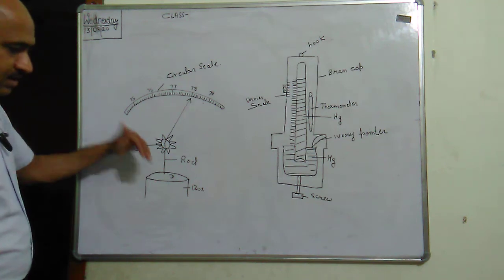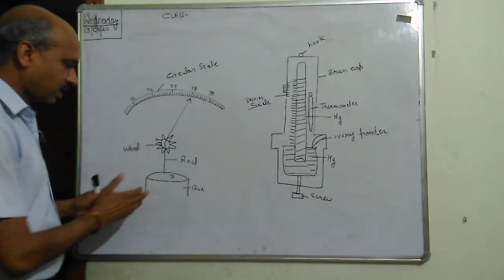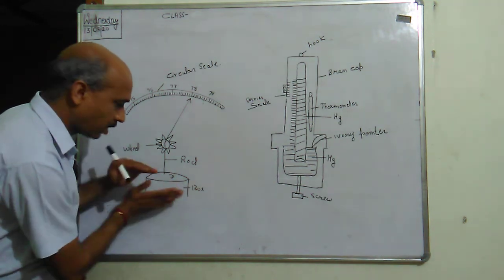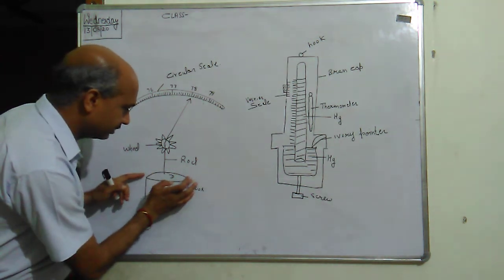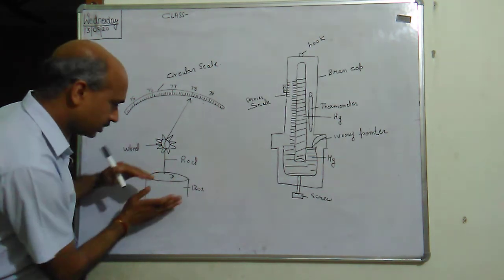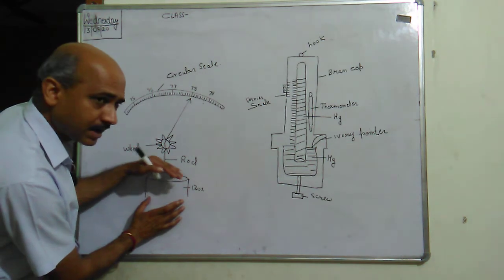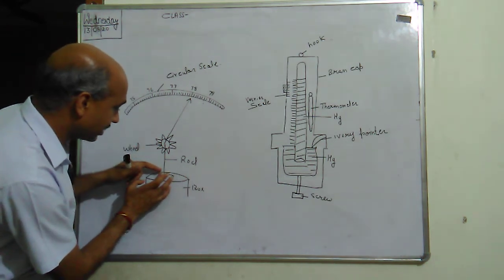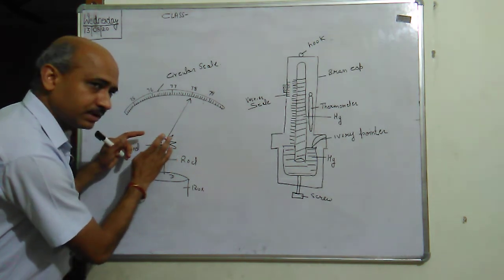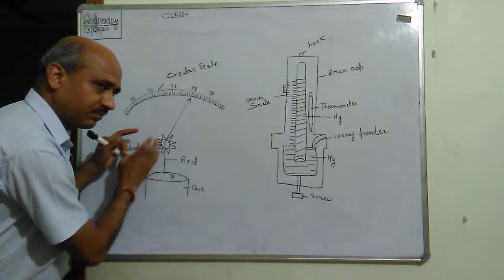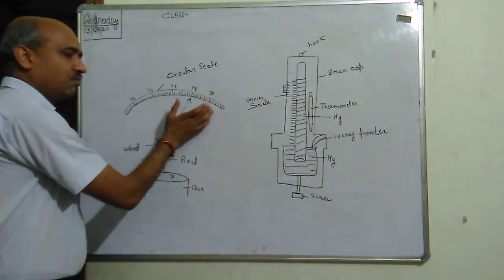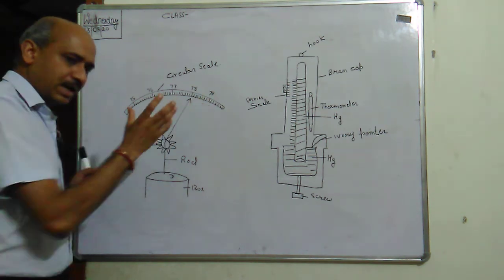Now when the pressure increases, what happens? The pressure increases and there will be expansion in the box. The balloon expands upward. In that case, the rod also goes upward, or we can say the rod will move and the wheel will start rotating. So when the wheel rotates, the needle will rotate and we can take our readings.